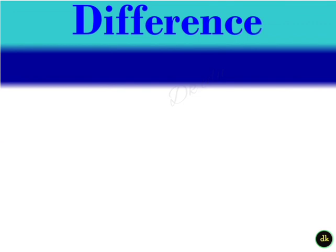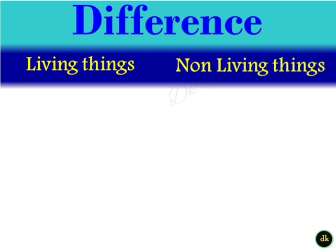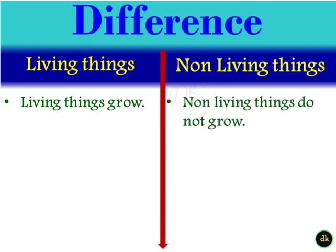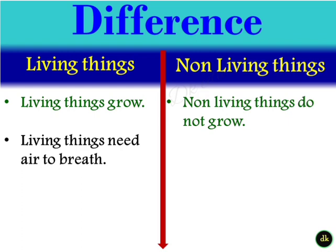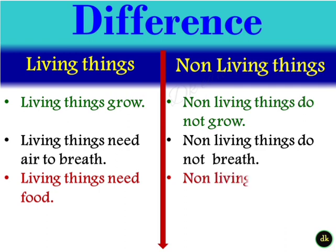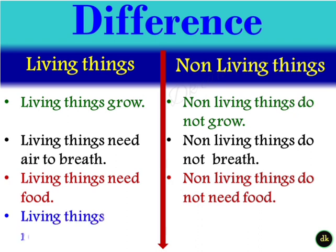Difference between Living Things and Non-living Things. Living things grow; non-living things do not grow. Living things need air to breathe; non-living things do not breathe. Living things need food; non-living things do not need food. Living things reproduce; non-living things do not reproduce.